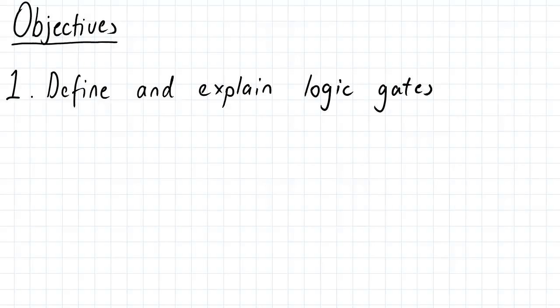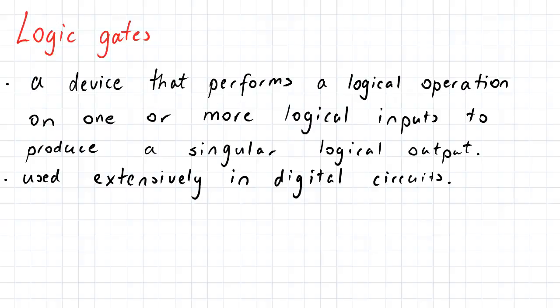Hi everyone. The objective of this video is to define and explain logic gates. A logic gate is a device that performs a logical operation on one or more logical inputs to produce a singular logical output. These logic gates are extensively used in digital circuits and prove to be the staple of our digital analyses.